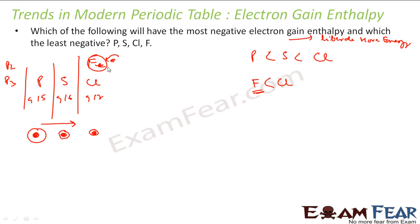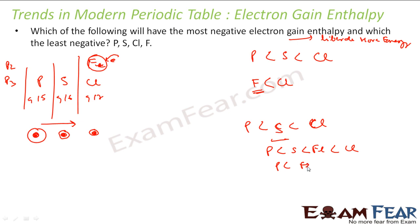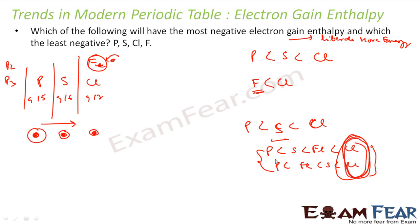So fluorine can be placed somewhere in the middle of the order. The options could be phosphorus, sulfur, fluorine, chlorine or some other arrangement — but I'm not sure of the exact middle positions. However, the question asks which is the least and which is the maximum. In both cases: chlorine is my maximum negative — maximum energy liberated means most negative — and phosphorus is my minimum, meaning least negative.